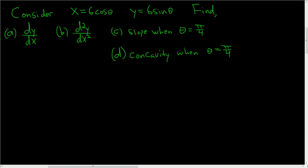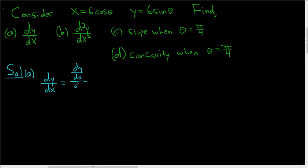We're given some parametric equations and we're being asked to find a couple different things. Let's go ahead and work through it. In part A, we're being asked for dy/dx. So dy/dx is equal to dy/dθ over dx/dθ.